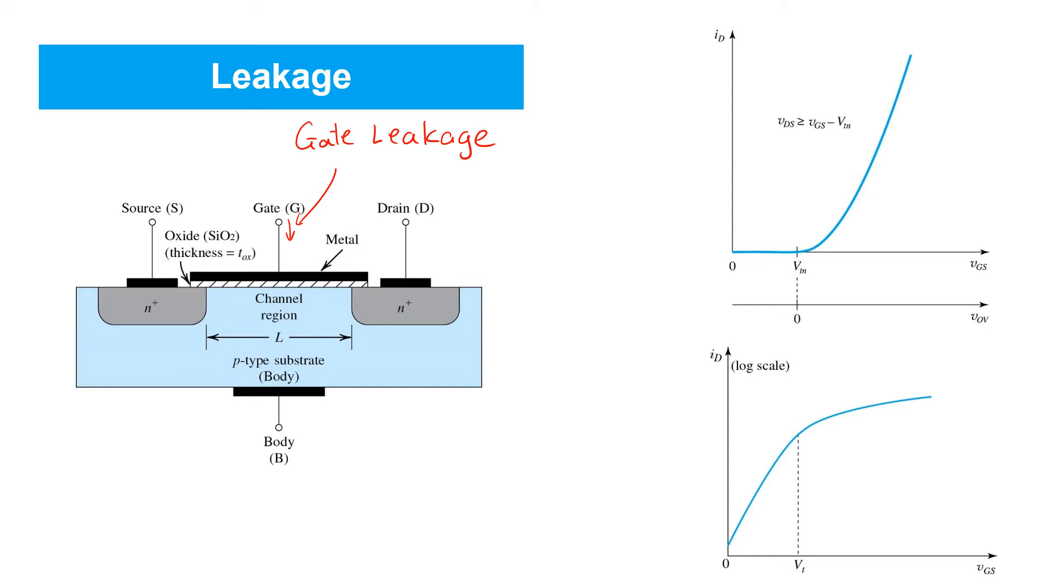Perhaps the largest source of leakage, however, is called subthreshold leakage. So when the gate source voltage is below the threshold voltage, our expectation is that the transistor is in cutoff and that there are depletion regions formed around the source and drain regions that prevent conduction. However, especially as transistor lengths become very small, a finite amount of current still can flow between drain and source even when the gate source voltage is below the threshold voltage. So this finite current is called subthreshold leakage.